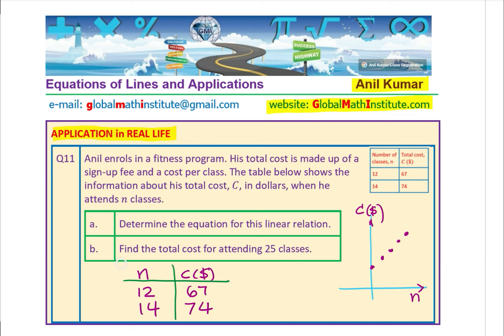We could use one of the data values. For 12 classes, $67 is being paid. Let us put 12 for n and 67 for c: 67 equals 7 over 2 times 12 plus b. Simplifying, 67 equals 7 times 6 plus b, which is 42 plus b. So b equals 67 minus 42. That gives us b equals $25, which represents the fixed cost.